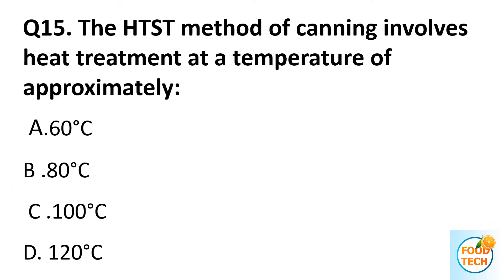Question 15. The STST method of canning involves heat treatment at a temperature of approximately: A. 16 degrees Celsius. B. 80 degrees Celsius. C. 100 degrees Celsius. D. 120 degrees Celsius.